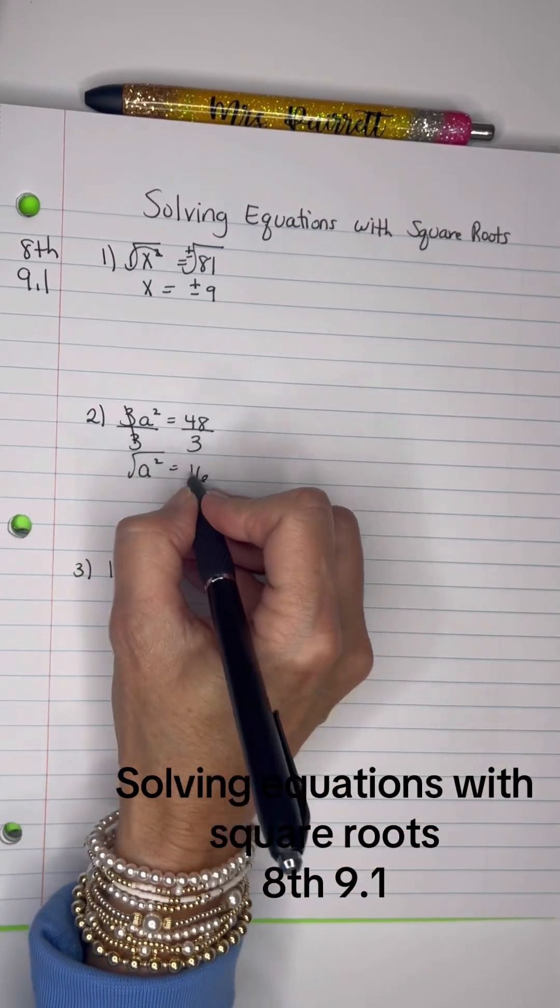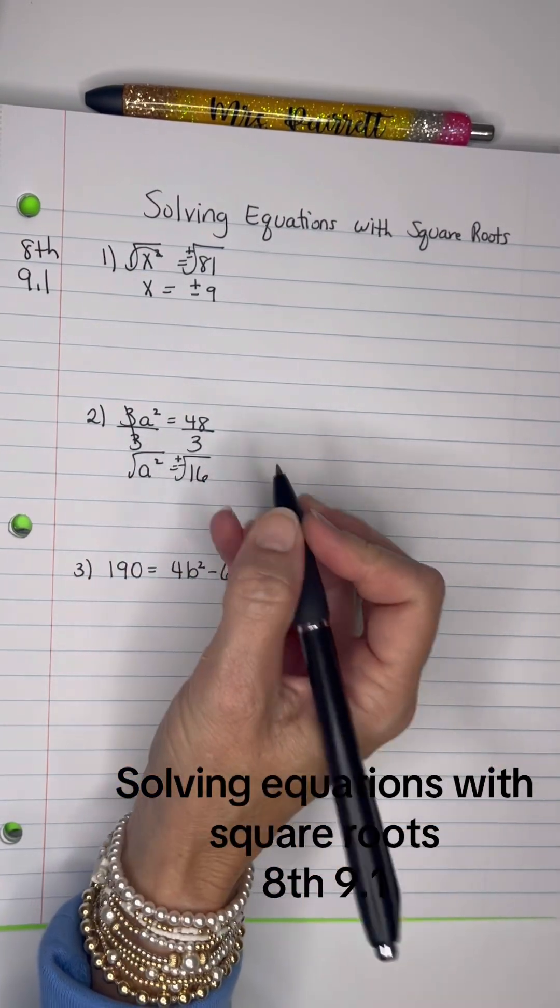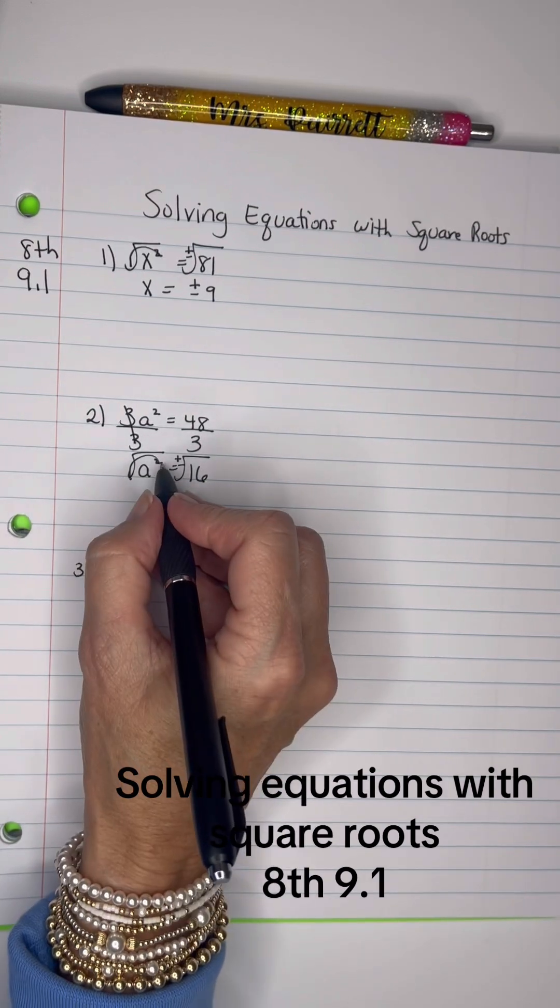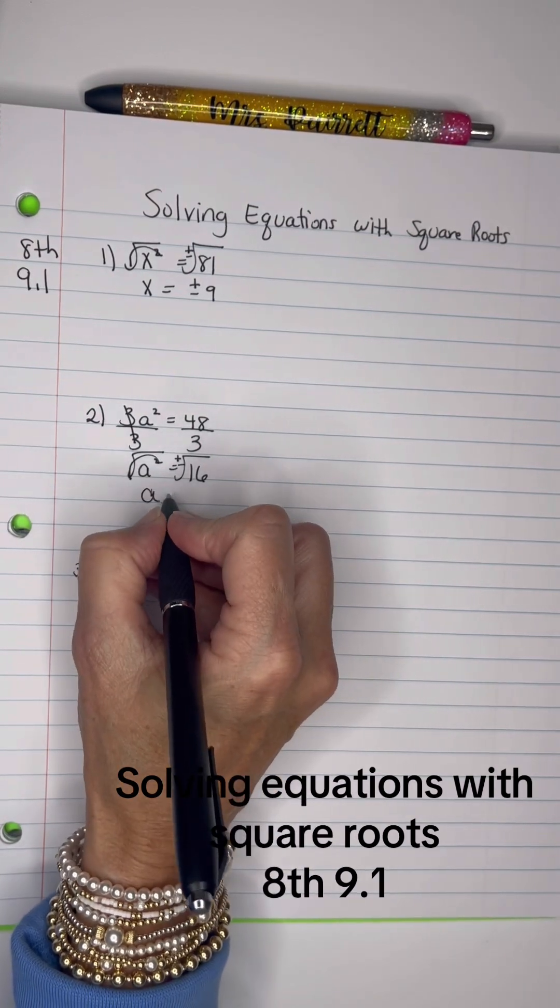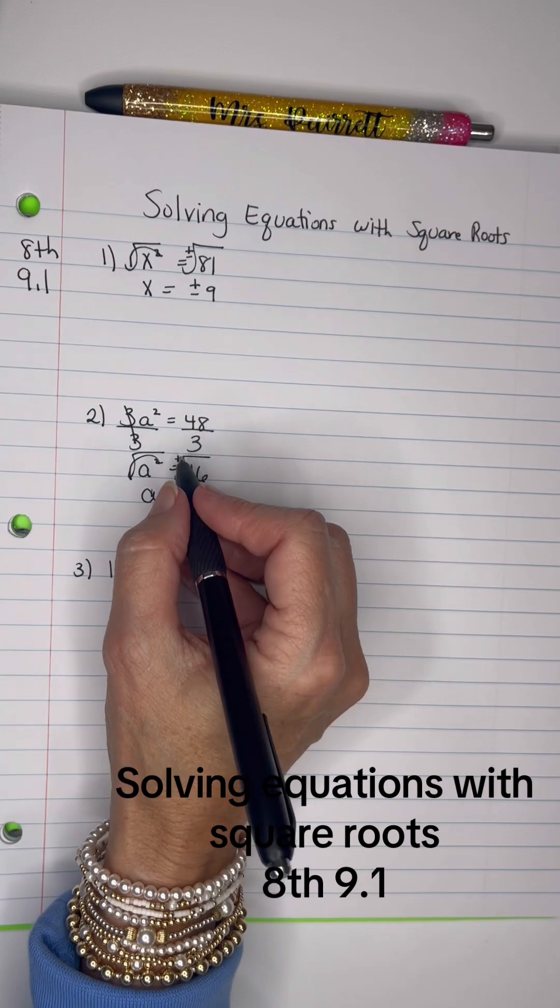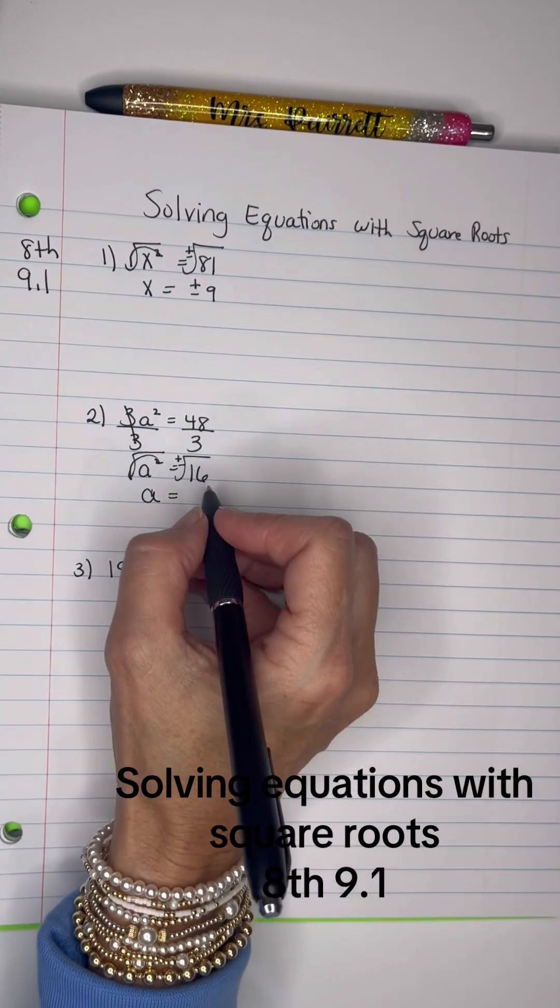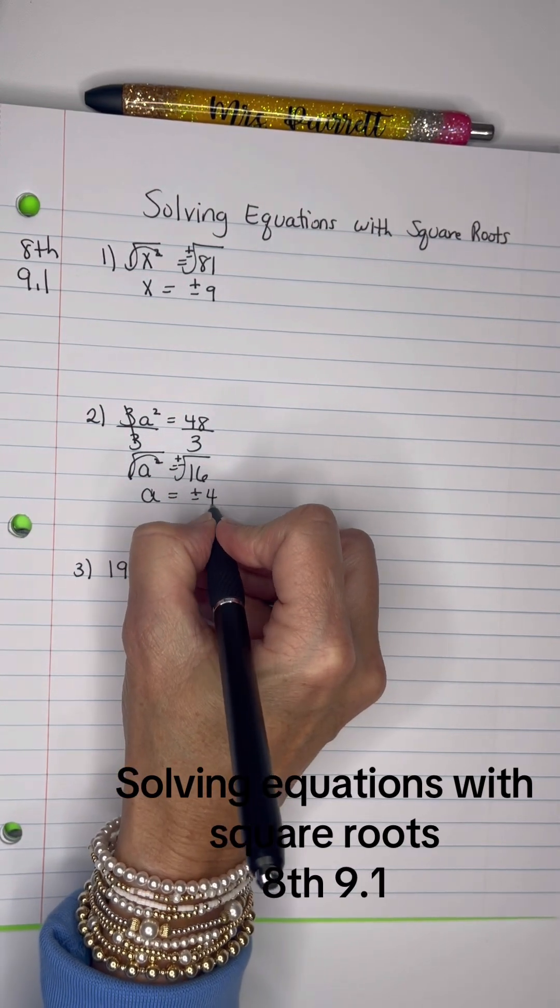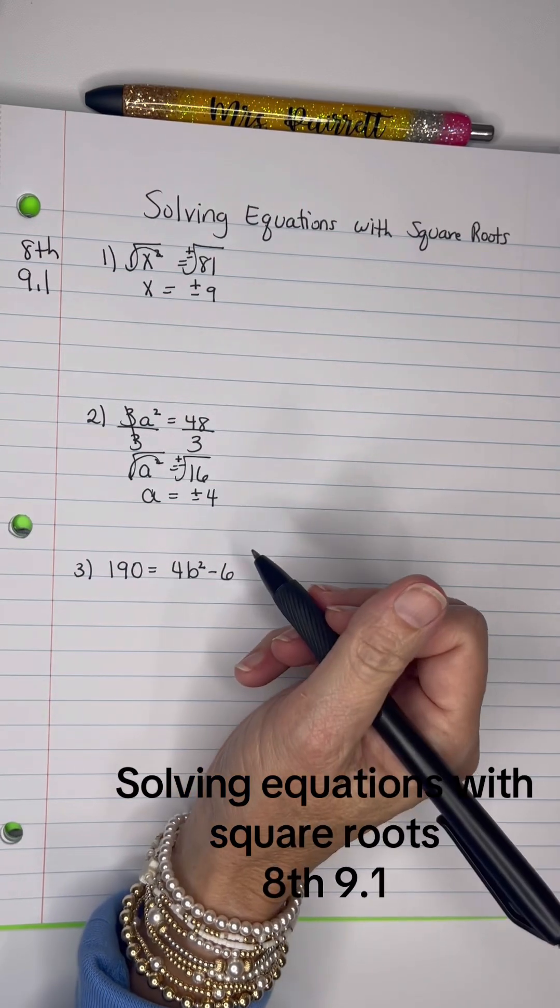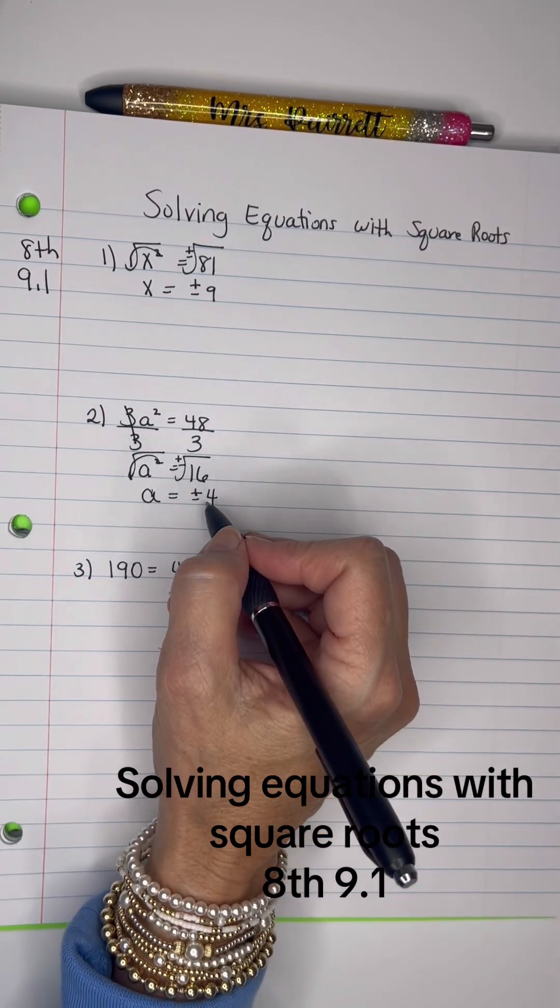Then we're going to take the square root of both sides, keeping in mind the positive and negative answer there. The square cancels the square root out, a is freed, and we have the positive or negative square root of 16 is positive or negative 4, because 4 times 4 is 16, but also negative 4 times negative 4 is 16.